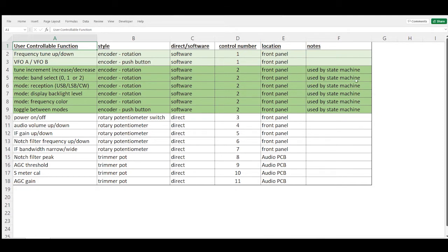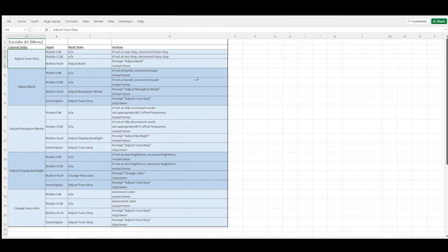Note that the second encoder also drives a state machine in the program. And that's what I'm showing here. There are five states in the machine. Each state corresponds to a menu mode, such as adjust tune step, adjust band, and so on. Inputs to the states are the obvious ones like clockwise and counterclockwise encoder rotations and the encoder push button. Note that I also included a timer expire input to all but one of the states. I'm using a timer to force the menu back to the adjust tuning step state because I see that as the most commonly needed menu command.